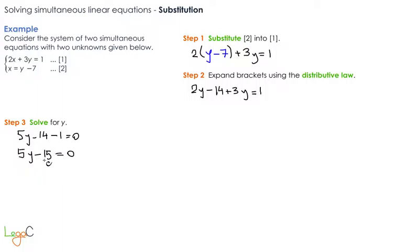We are going to move the negative 15 from the left-hand side to the right-hand side, and this becomes 5y equals 15. We divide the equation by 5, and we end up with y equals 3.